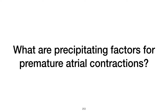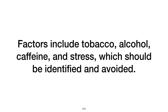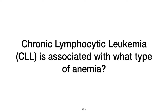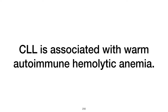What precipitates premature atrial contractions? Premature atrial contractions can be precipitated by tobacco, alcohol, caffeine, and stress, which should be identified and avoided. CLL is associated with what type of anemia? Chronic lymphocytic leukemia (CLL) is associated with warm autoimmune hemolytic anemia, where the body's immune system mistakenly destroys its own red blood cells.